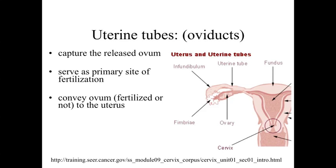It's going to take a little bit of time for the egg cell, that released ovum, to be transported throughout the uterine tubes. And so the uterine tubes, the oviducts, the fallopian tubes, are often going to be the primary site for fertilization to occur.